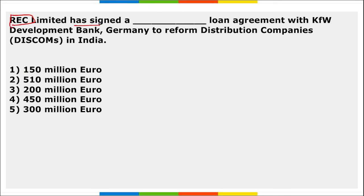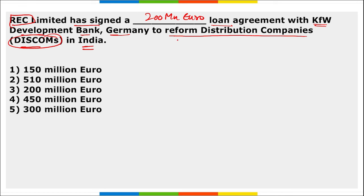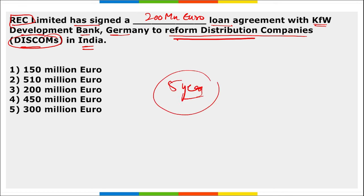Next: REC (Rural Electrification Corporation) Limited recently signed a 200 million euro loan agreement with KfW Development Bank of Germany to reform the distribution companies (DISCOMs) in India. Under this agreement, the scheme extends for five years and will strengthen the supply of infrastructure based on set benchmark criteria.